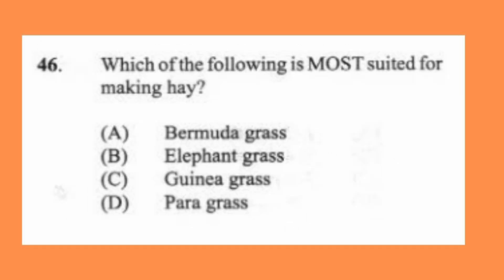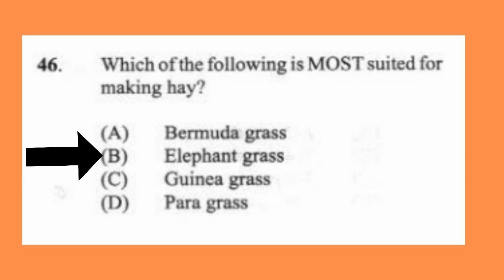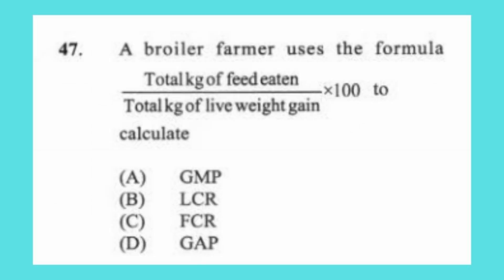Question 46: Which of the following is most suitable for making hay? (a) Bermuda grass, (b) elephant grass, (c) guinea grass, (d) pangola. The answer is B, elephant grass.